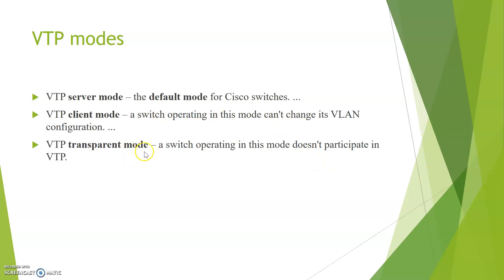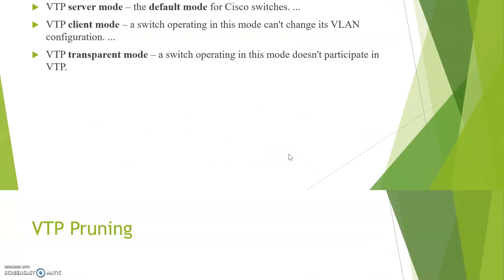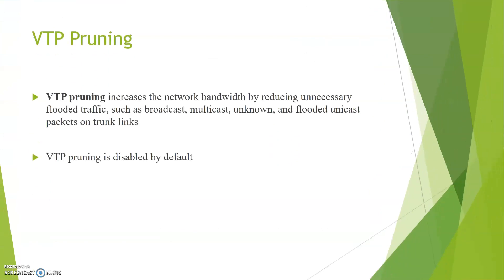In VTP transparent mode, a switch operating in this mode does not participate in VTP. What is VTP pruning? VTP pruning increases network bandwidth by reducing unnecessary flooded traffic such as broadcast, multicast, and unknown traffic, especially on a trunk link. VTP pruning is disabled by default and can be enabled with the VTP pruning command.